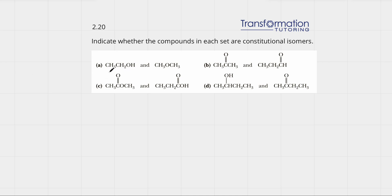The first thing we need to do is write out our formula for each molecule and compare the formulas — are they the same or not? The molecule on the left has two carbons, six hydrogens, and one oxygen. The molecule on the right also has two carbons, six hydrogens, and one oxygen.